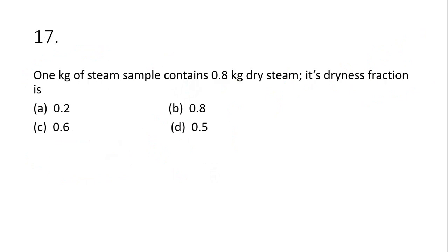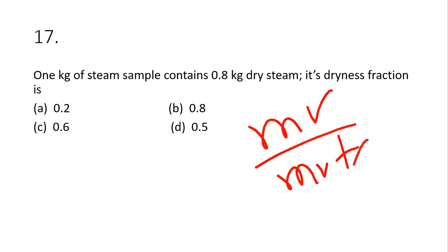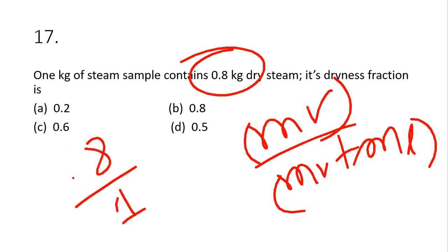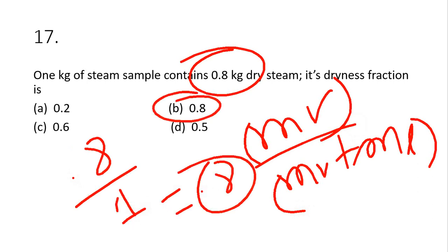Question 17: 1 kg of steam contains 0.8 kg of dry steam. Find the dryness fraction. Dryness fraction = m_v / (m_v + m_l) = mass of vapor / total mass = 0.8 / 1 = 0.8. Option B is the correct answer.